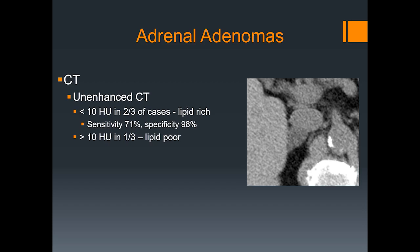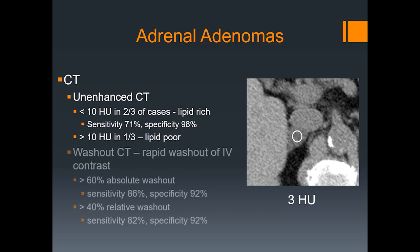However, in one-third of cases the attenuation is greater than 10 Hounsfield units — these are so-called lipid-poor adenomas. For those lesions that measure greater than 10, we can perform washout CT. Adenomas demonstrate rapid washout of IV contrast; therefore, an absolute washout of greater than 60% or relative washout greater than 40% has moderate to high sensitivity and high specificity. However, these numbers are not 100%, and there are important exceptions which we will discuss later.